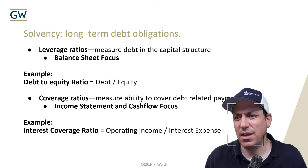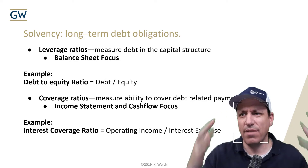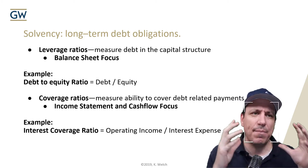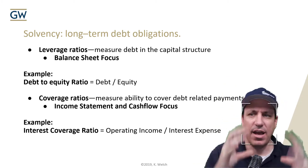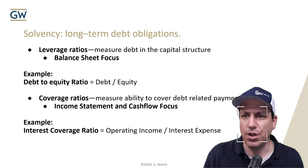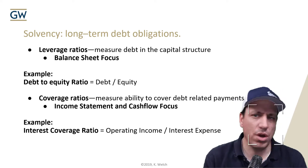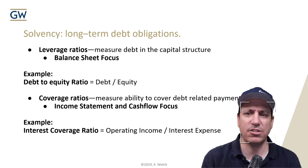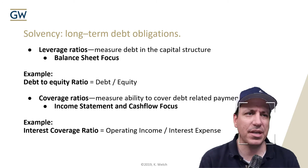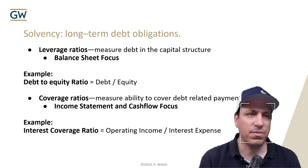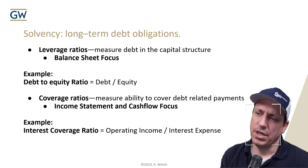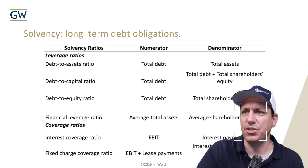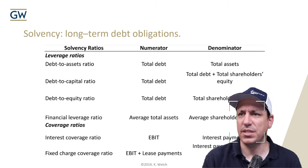For solvency ratios related to long-term debt obligations, you look at leverage ratios that measure the level of debt in the capital structure — these have a balance sheet focus. Debt to equity ratio measures how much debt you have relative to equity. Coverage ratios measure the ability to cover debt payments with cash flows. An example is the interest coverage ratio: operating income or EBIT over interest expense.